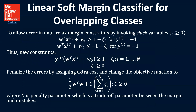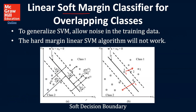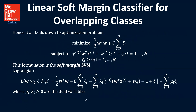This is some more supporting mathematics to allow for error in the data. We relax the margin constraints by invoking slack variables — that's what this variable here, xi (Ada), represents as a possibility to allow us to do that. We penalize the errors by assigning extra costs and change the objective function, where C is a penalty parameter, which is a trade-off parameter between the margin and mistakes. It gets a little bit more complicated to allow for soft decision boundaries, but based on the data sets we have, that may be much better for us. This all boils down to the optimization problem laid out here.